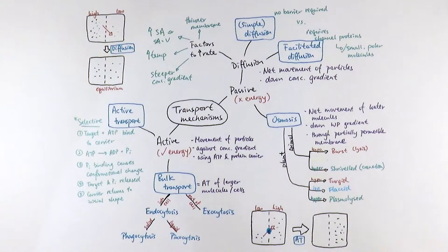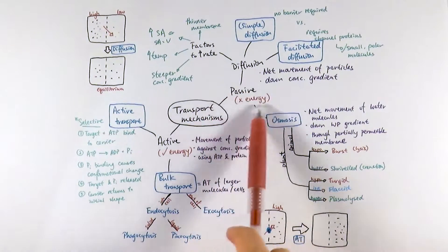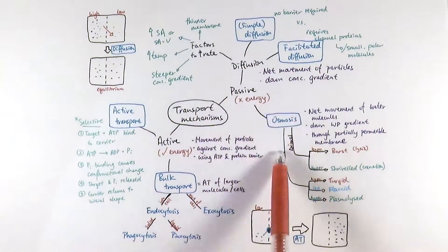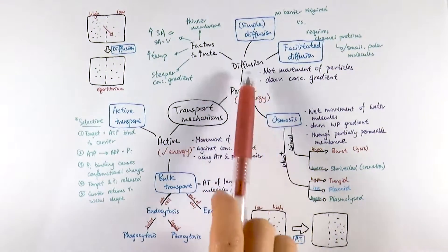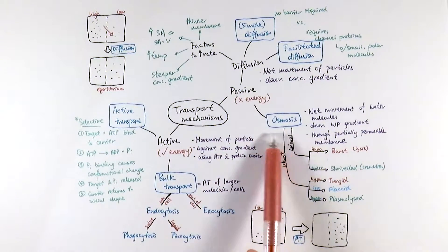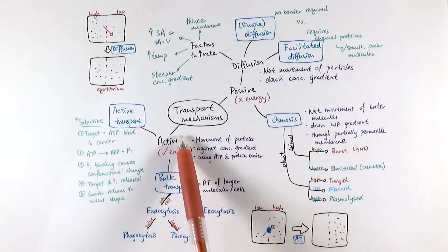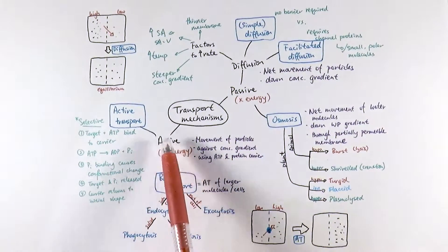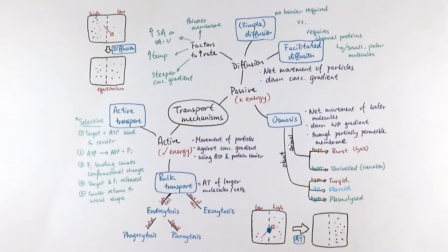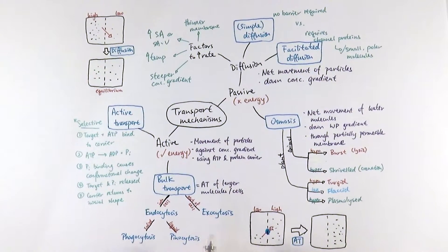There are two general types of transport mechanism: one that is passive and one that is active. Passive transport means it does not need energy; active transport means it does. There are two separate types of passive transport — diffusion and osmosis — and for the active mechanisms, we have active transport and bulk transport.